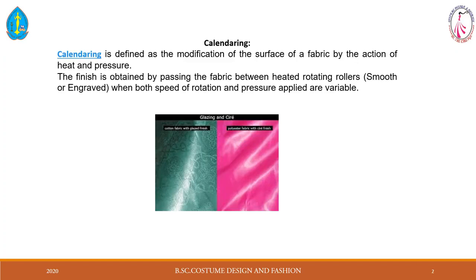Calendaring is defined as a modification of the surface of a fabric by the action of heat and pressure. In the calendaring process, we are changing the fabric surface property using heat and pressure. This finish is achieved by passing the fabric between hot rotating rollers — the roller surface may be smooth or engraved. The rotation speed and pressure applied on the rollers may vary, and based on this combination, different fabric properties are introduced.